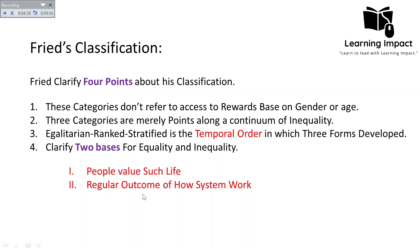The second reason is that equality or inequality can be the regular outcome of how a system works, regardless of what people desire. For example, under the capitalist system, inequality between the have and have-not classes is enhanced even if people desire equality — their struggle may get in vain because it is the social structure itself leading to inequality. So equality and inequality may exist in society either because people value such a life, or because it is the regular outcome of how the system works.